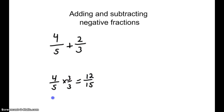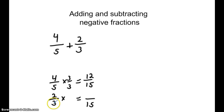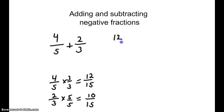Let's take a look at 2 thirds. If we take 2 thirds and we multiply by some number to make an equivalent fraction, 3 times some number equals 15. Well, 3 times 5 is 15. Whatever we do to the denominator, we do to the numerator, and 2 times 5 is 10. So now we have the problem rewritten as 12 fifteenths plus 10 fifteenths.